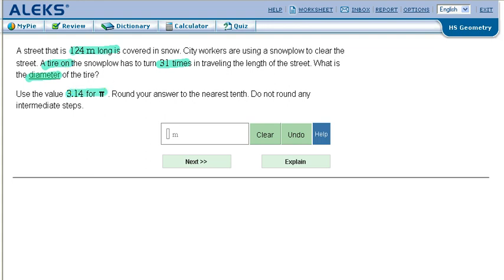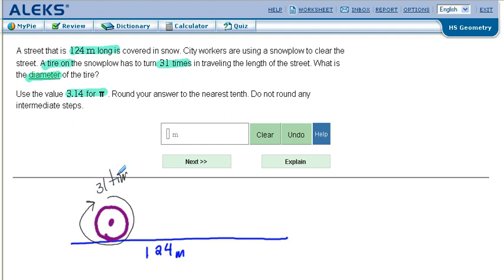We're going to use 3.14 for pi. Let's get the situation in our heads. We have a street. This street is 124 meters long. We have the snowplow and the tire of the snowplow. Here's the tire. This tire has to turn 31 times in order to travel the length of the street.